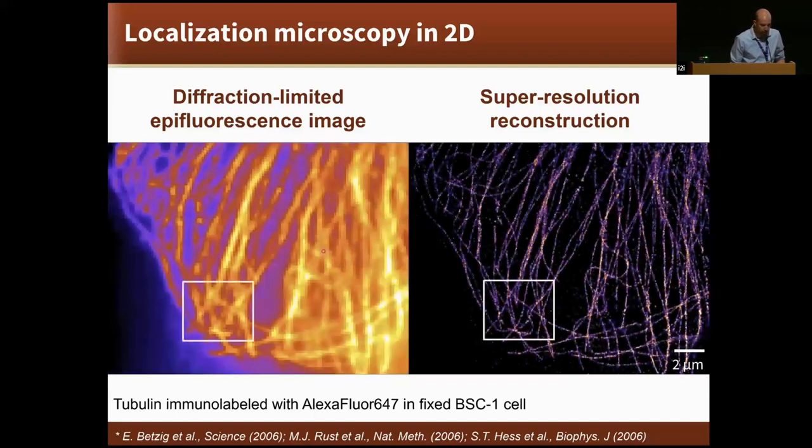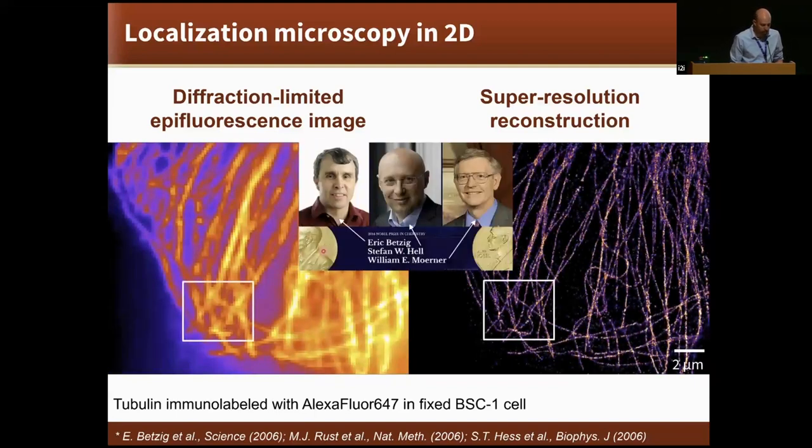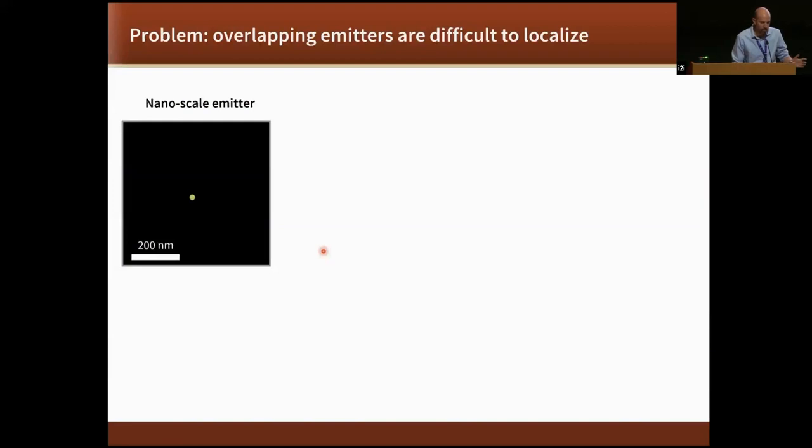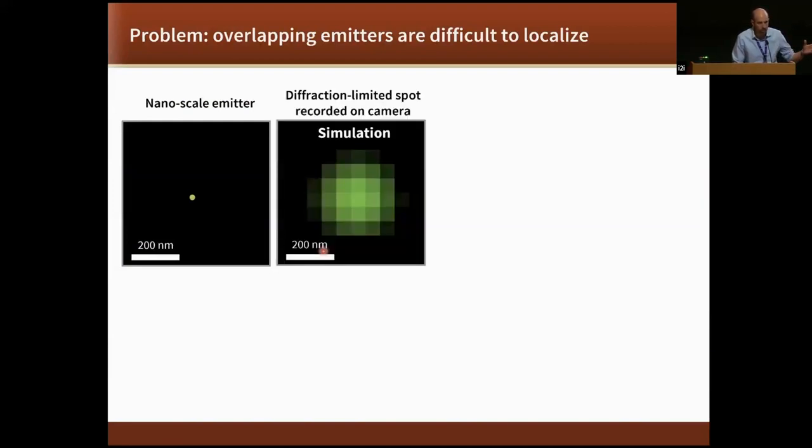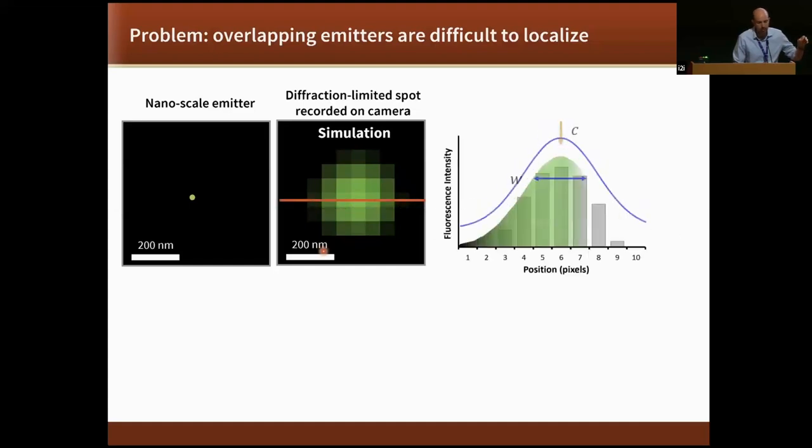If you do this repeatedly, a million times, you end up with tenfold increase in resolution at a normal price. What happens here is you transform the problem from a deconvolution problem to many parameter estimation problems that are relatively easy to solve. The cost is that the sample had to be static, couldn't move while you're doing this. You have temporal resolution of minutes. You have your nanoscale emitter, you get a diffraction-limited spot, but that's fine because you only care about the center. You fit this with some fitting algorithm and everybody's happy.